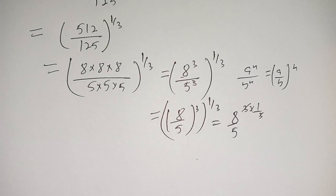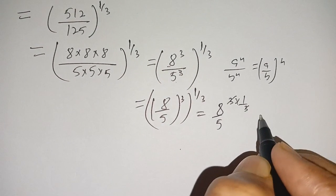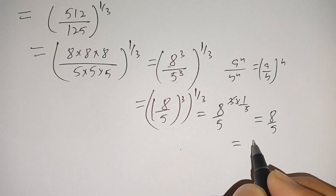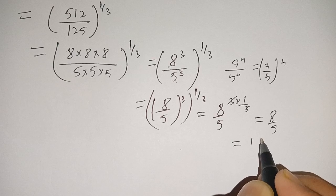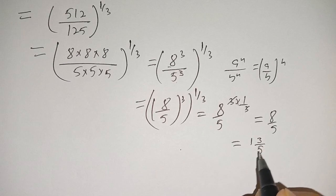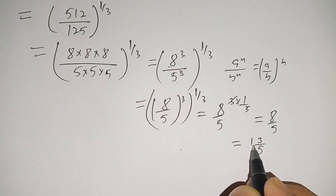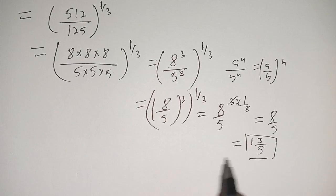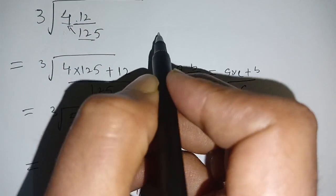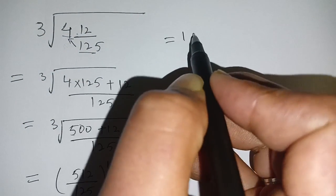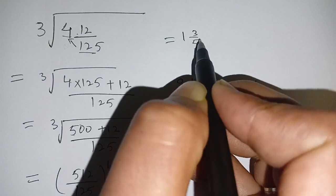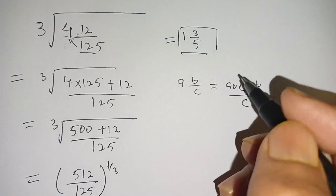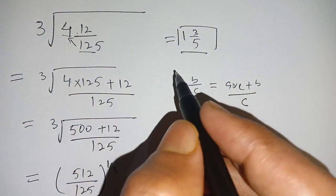This can be written as 8 divided by 5, to the power 3 times 1 divided by 3 — the 3s cancel out — giving us 8 divided by 5. This can be written as 1 and 3 divided by 5, because 5 times 1 is 5, plus 3 is 8. Thus our final answer is 1 and 3 divided by 5. If you're new here, please subscribe to the channel for more informative videos. See you in the next video, till then bye.